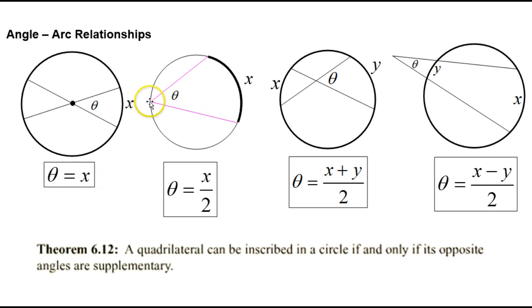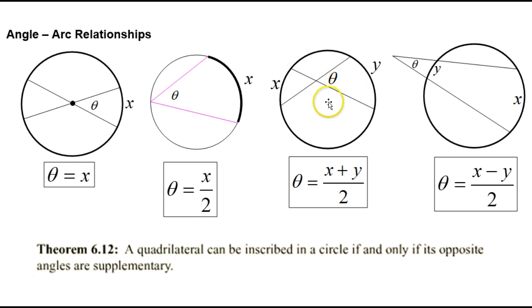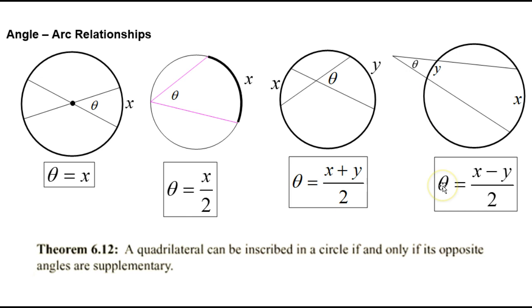If the vertex is on the circle, the angle is half the arc — or you could say the arc is double the angle. If the angle vertex is floating around inside the circle but not at the center, the angle equals arc plus arc divided by two. If the angle is outside the circle, the angle equals the big arc minus the small arc divided by two.